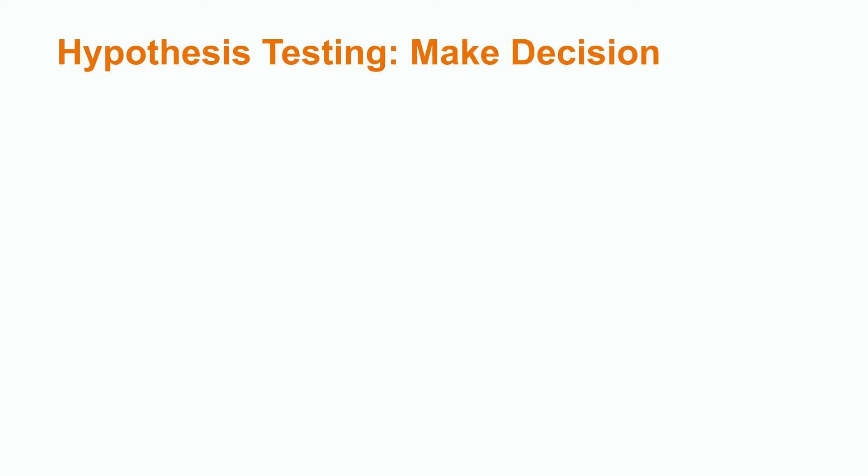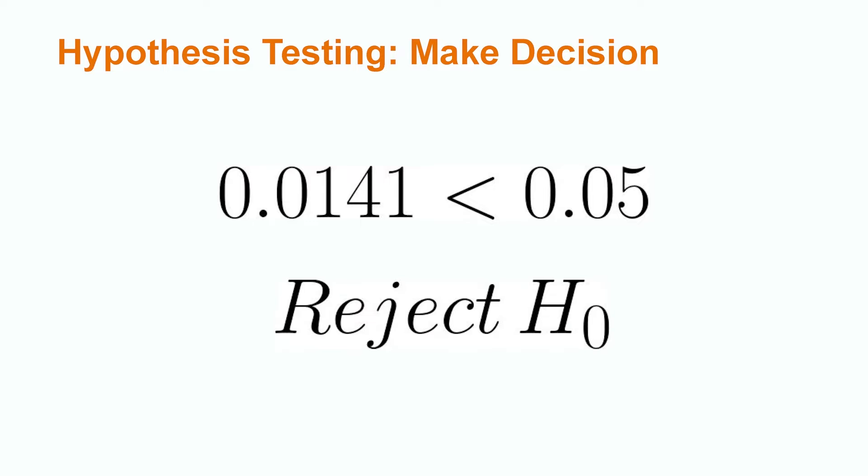Now that we have our p-value and critical value, we can determine whether or not we reject our null hypothesis. If we reject our null hypothesis, this means that the value we obtained from our sample is significantly different than the hypothesized value. Because our two-tailed p-value of 0.0141 is less than our value of alpha of 0.05, we reject the null hypothesis.